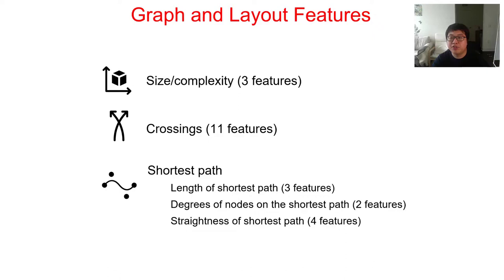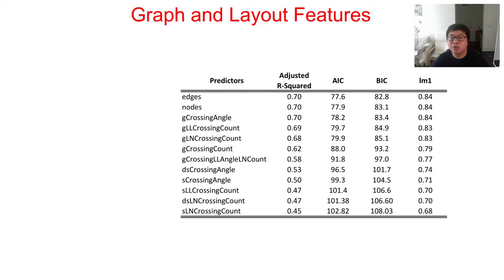We divide these features into three groups. First one describes the size of the graph. It contains number of nodes, number of links, and density. Second describes the crossings from various perspectives. Please see our paper for details. The last type contains features related to the shortest paths. We use the linear model to find the relationships between these features and the hardness. Here we demonstrate the top 12 models with just one predictor. We can see the top two predictors are the features for graph size, and the later 10 predictors are features for crossings.